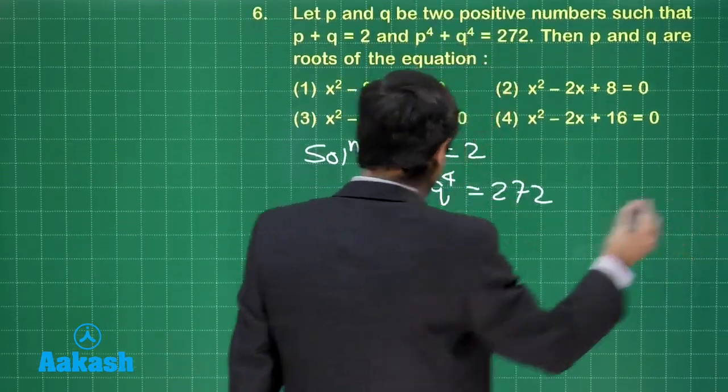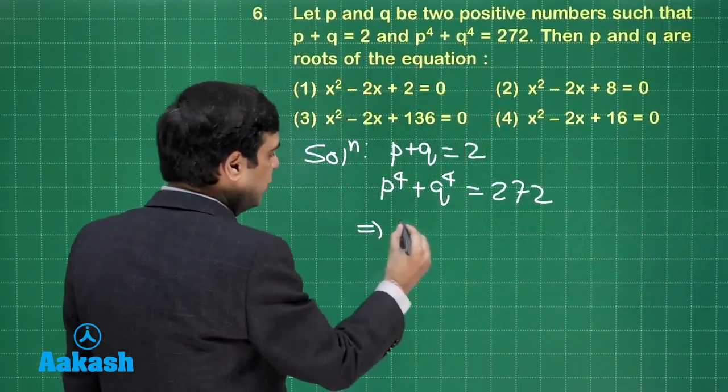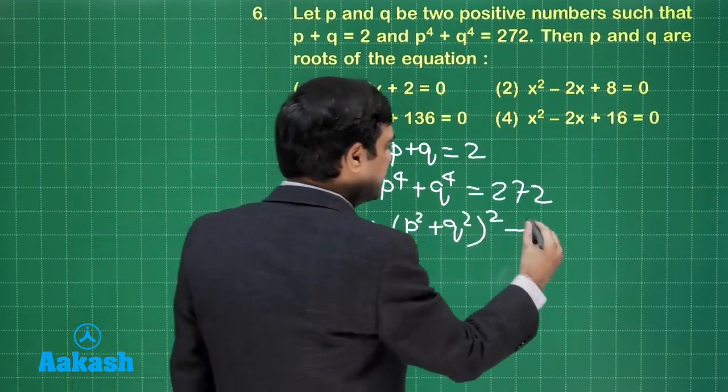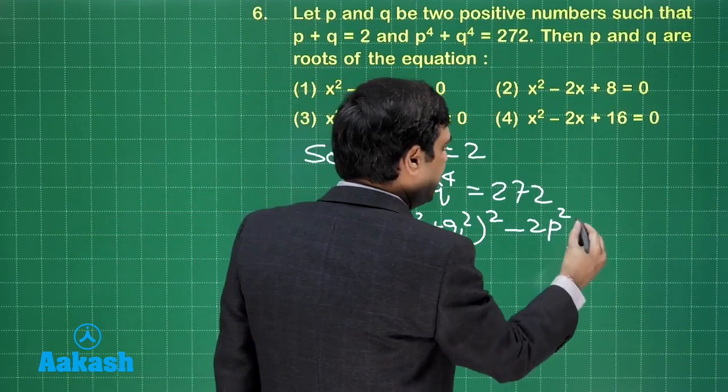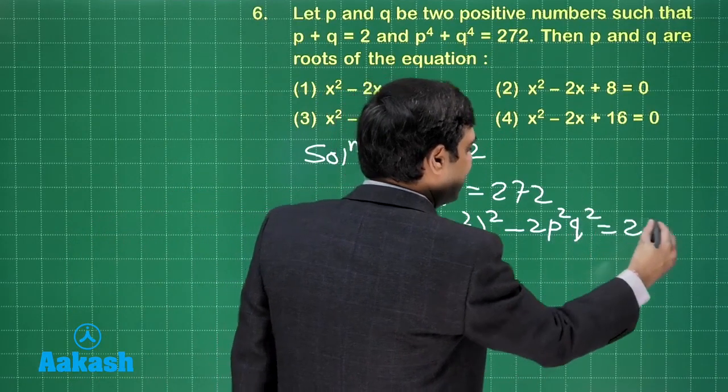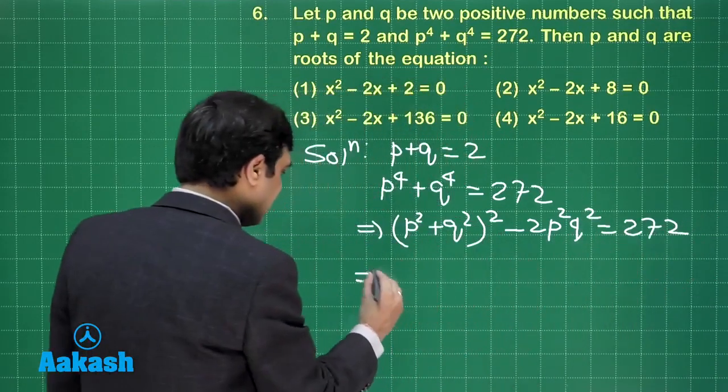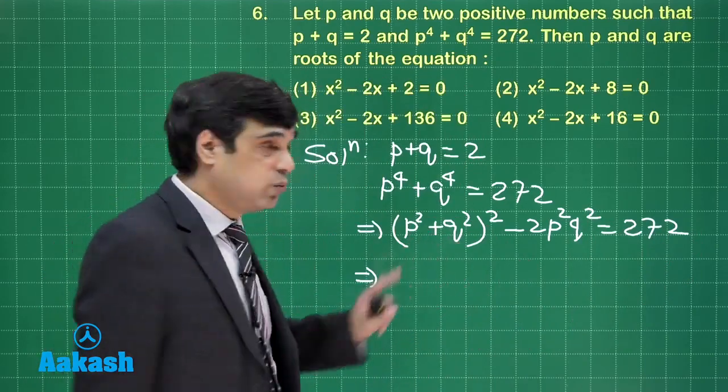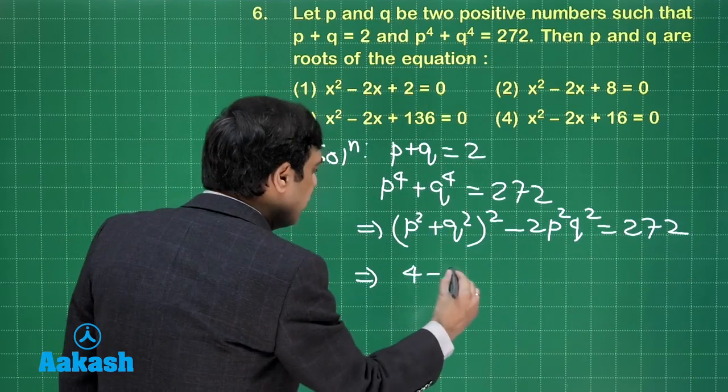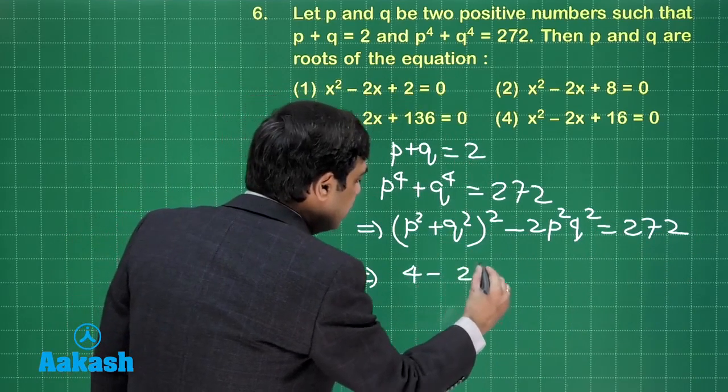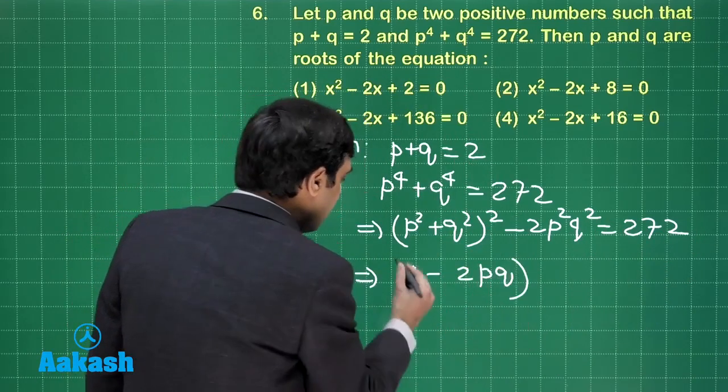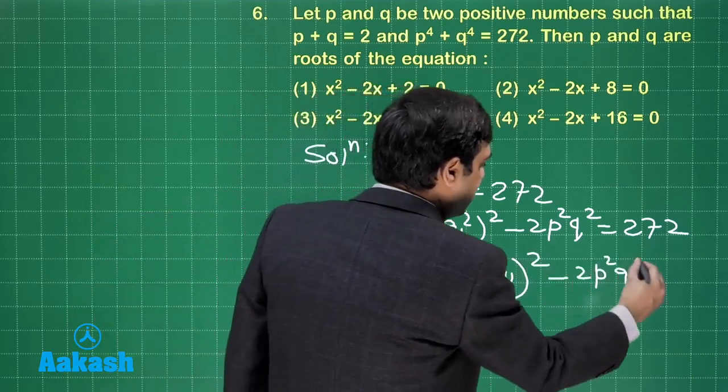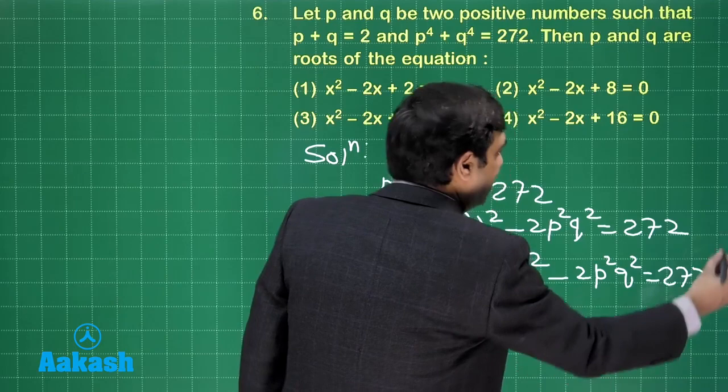p plus q is 2, p⁴ plus q⁴ is equal to 272. Now this p⁴ plus q⁴ can be written as (p² plus q²)² minus 2p²q² is equal to 272. Further it can be written as (p plus q)² minus 2pq.